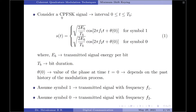Let us consider a continuous phase frequency shift keying signal defined over the interval 0 to T_B as shown in equation 1. The CPFSK signal S(t) equals square root of 2E_b/T_B · cos(2πf₁t + θ(t) + θ(0)) for symbol 0, where E_b stands for transmitted signal energy per bit, T_B is the bit duration, and θ(0) denotes the value of the phase at time t=0, which depends on the past history of the modulation process.